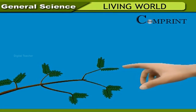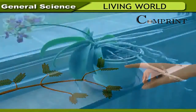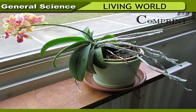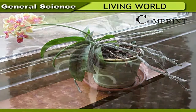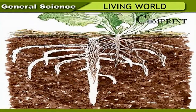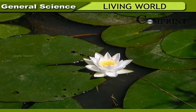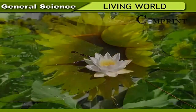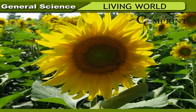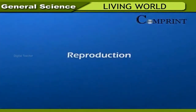Living organisms respond to external stimuli. For example, when the touch-me-not plant is touched, it immediately folds its leaves, and after some time the leaves return to their original state. The shoots of plants grow towards light, while roots grow deep into the soil. Other examples include lotus blooming during the day, water lily blooming at night, and sunflowers facing the sun — these are all responses that plants show to external stimuli.